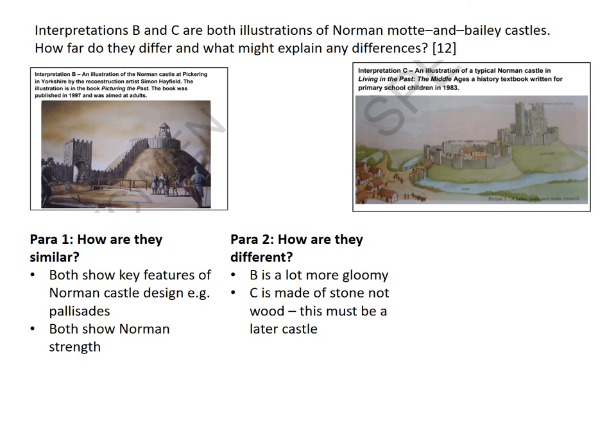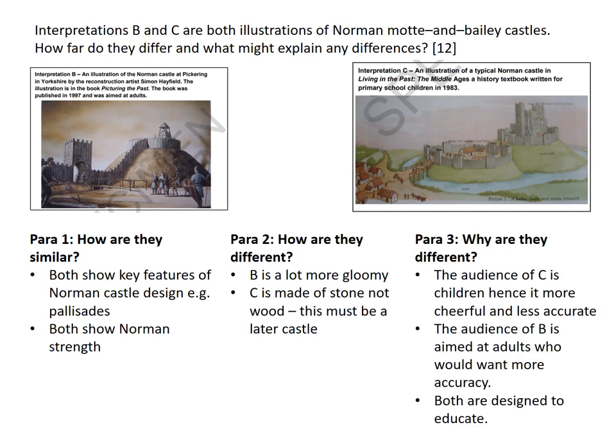Now in paragraph three I look at why they are different. They're different because they're really written for different audiences. The audience of C is primary school children — that's why they've made it look more cheerful and it's not so crucial that it gets all of the historical accuracy right. Whereas B is aimed at adults who would want more accuracy, making it as historically accurate as possible. However, both images are similar in terms of purpose because they are both designed to educate. In that last paragraph, talk about audience and purpose.